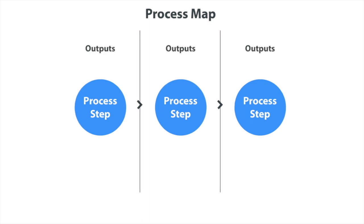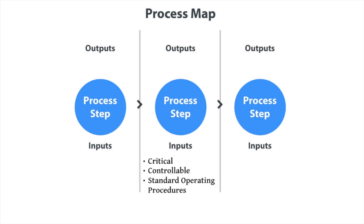In step two, list all the outputs of each process step. In step three, list all the inputs required to create the output of each process step. With step four, you classify the process inputs as either critical, controllable, standard operating procedure, or noise.